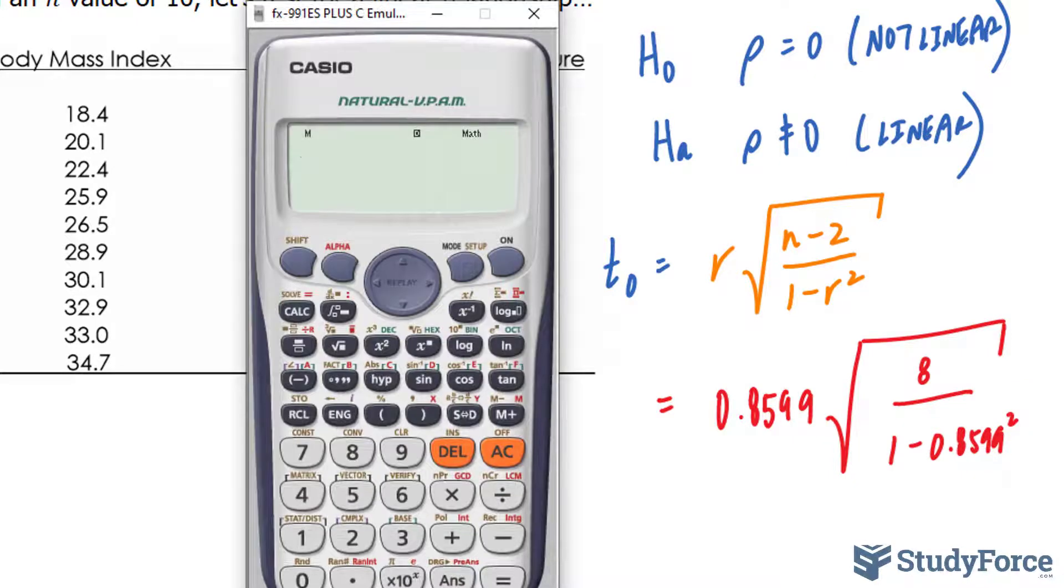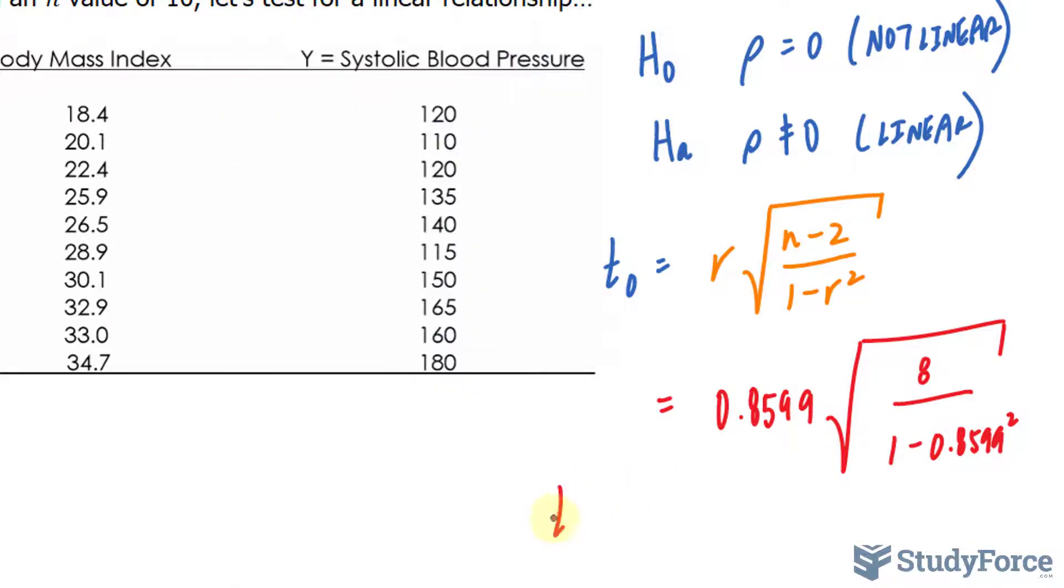Let's go ahead and substitute these values into our calculator. Multiply it to the square root of 8 divided by 1 minus 0.8599 raised to the power of 2. We end up with 4.76. So t observed is approximately 4.76.